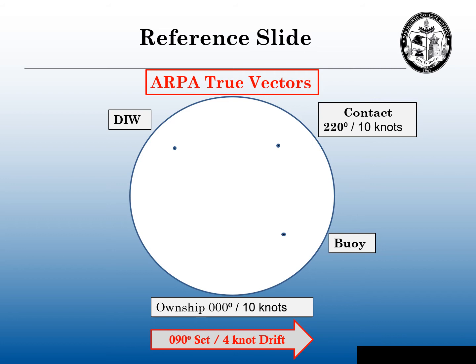This is going to be my reference or base slide. I'm going to be using ARPA true vectors. We're going to have a set and drift of 090 degrees at four knots. Our own ship is heading 000 degrees at 10 knots. Out to the northeast, there's a contact going 220 degrees at 10 knots. Up to the northwest, there's a vessel that's dead in the water. And down to the southeast, there's a buoy.